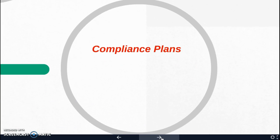Compliance plans are our next point. The goal of a compliance plan is to prevent fraud and abuse through a formal process that identifies, investigates, fixes, and aims to prevent any repeat violations relating to reimbursement for health care services. The compliance plan keeps the facility honest and ensures they are not fraudulently billing, because fraudulent billing raises costs for everyone — the health care provider, insurance companies, and patients, whose premiums will go up if the insurance company is losing money.